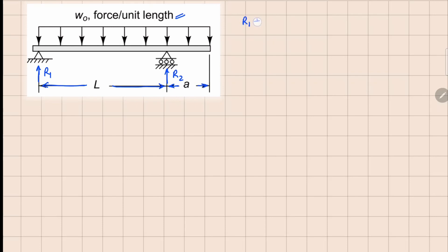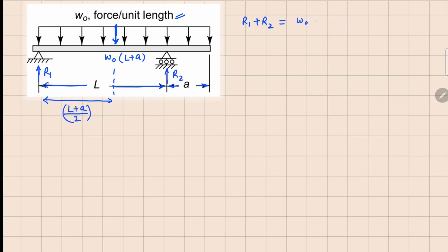To find these reactions we can write R1 plus R2 equals the equivalent force from this distributed force, which acts right at the center. The value of this force is going to be w₀ times (l plus a) because it's acting over a distance of l plus a, and this distance is (l plus a) divided by 2. So R1 plus R2 equals w₀(l plus a).